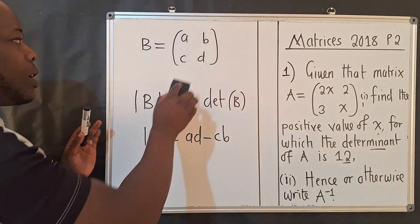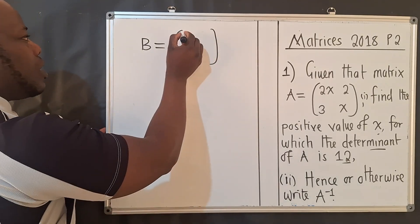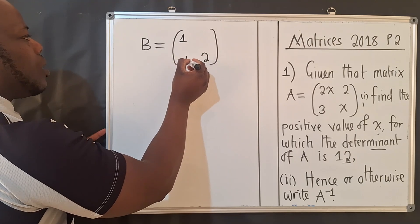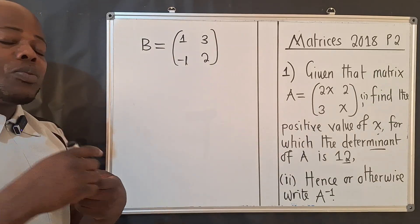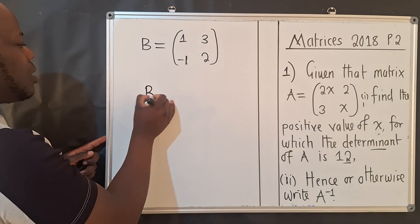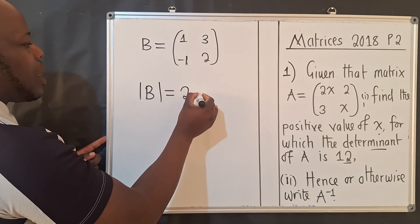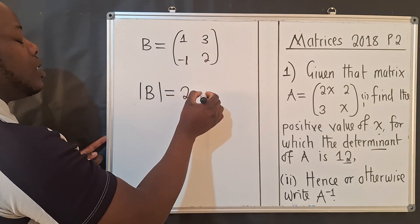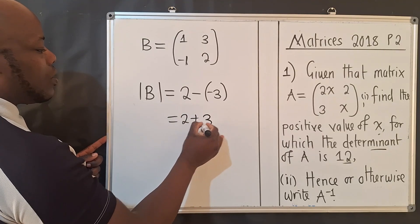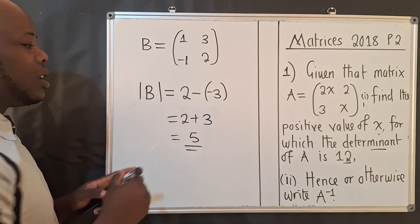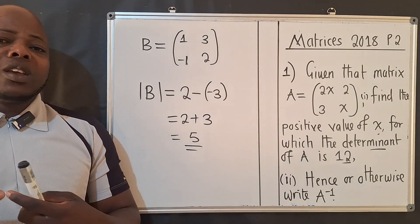Let me give you a numerical example. Say you have the matrix [1, 2; -1, 3]. The determinant equals 1 times 3, which is 3, minus negative 1 times 2, which is negative 2. That gives us 3 plus 2, so the determinant is 5.